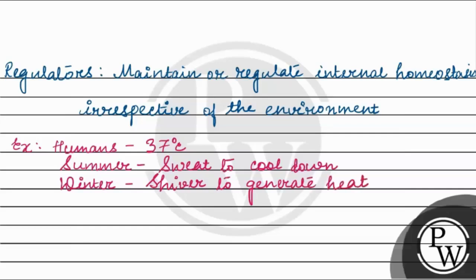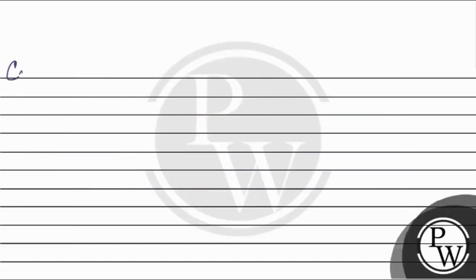That is, irrespective of the external temperature, our internal body temperature always remains at 37 degree Celsius. If we compare this with the conformers...